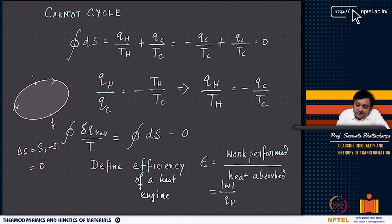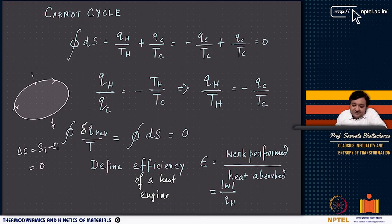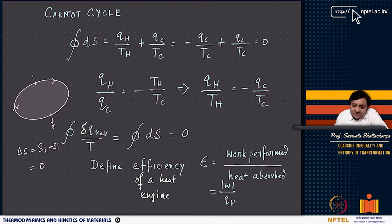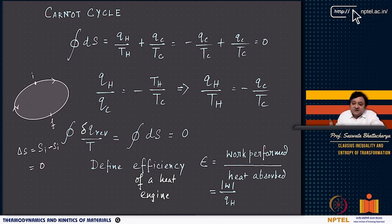This delta Q reversible by T — or Q reversible by T — represents entropy, a state function. We proved this for the Carnot cycle using an ideal gas, but it doesn't matter whether it's an ideal gas, a real gas, or any other substance. The cyclic integral of differential changes in entropy will always be zero. Entropy is as much a state function as internal energy.